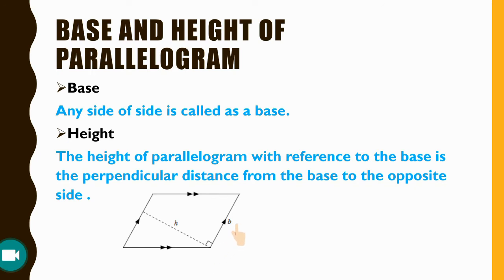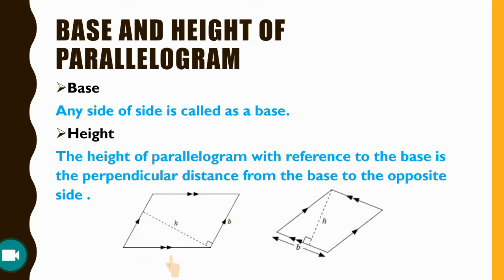If we consider one side as the base, the opposite side is also the same length, and the distance between these two lines is called the height of the parallelogram. Similarly, if we consider another side as the base, then the height is the distance between that side and its opposite side.